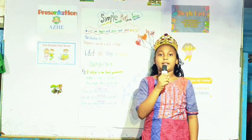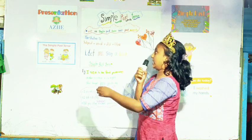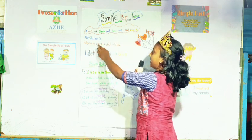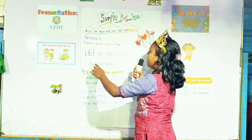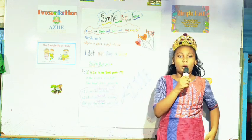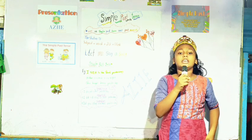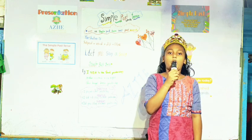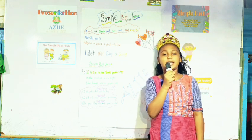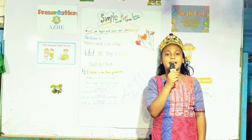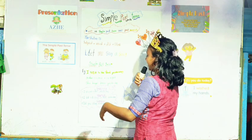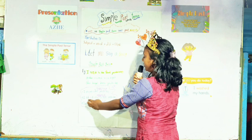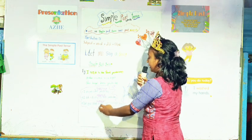Good evening everyone. I am Kritika. I am a student of ASI. I explain the simple past tense. We use simple past tense to tell past events. Structure: subject plus verb plus did plus object. Oh yeah, simple past, believe me, you can study. Subject plus verb plus did plus object in the rest of life. You can study simple past. Example: I played cricket yesterday. I did not play cricket yesterday. Did you play cricket yesterday?